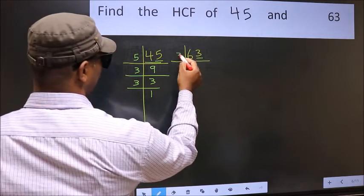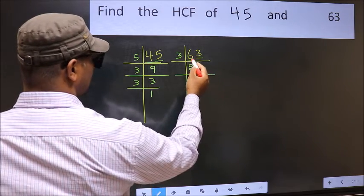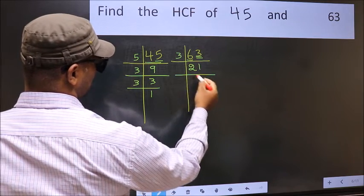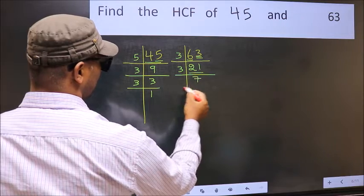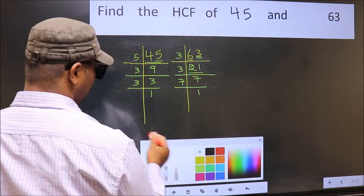So take 3. First number 6, when do we get 6 in 3 table? 3 twos, 6. The other number 3, when do we get 3 in 3 table? 3 once, 3. Now 21 is 3, 7 times 21. 7 is the prime number, so 7 once is 7.